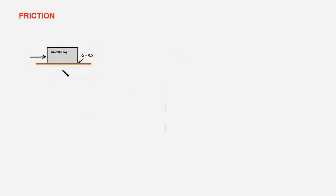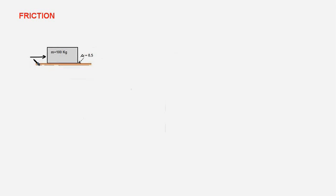Let's say we have a heavy body such as a wooden crate or a steel almira resting on a rough horizontal floor. The mass of the body is 100 kilograms and the coefficient of friction between the block and the floor is 0.5. We are interested in finding out the magnitude and direction of force of friction when we apply a force on the body, first a small force and then forces of larger magnitude, and under each situation we want to find the frictional force.